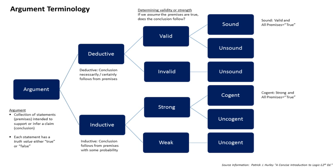Modus ponens, also known as 'affirming the antecedent' or 'the law of detachment,' is the primary deductive rule of inference. It applies to arguments that have as first premise a conditional statement P → Q, and as second premise the antecedent P of the conditional statement. It obtains the consequent Q of the conditional statement as its conclusion.